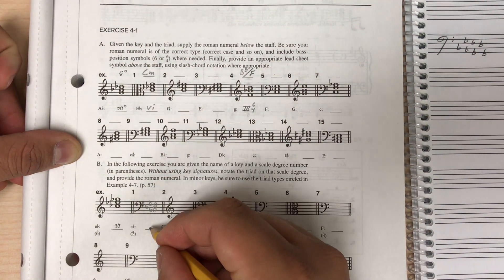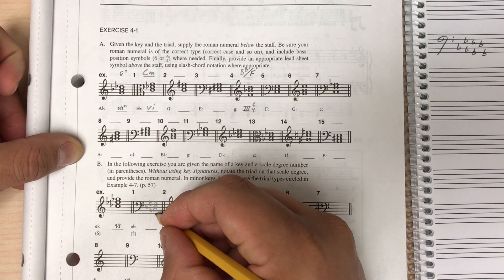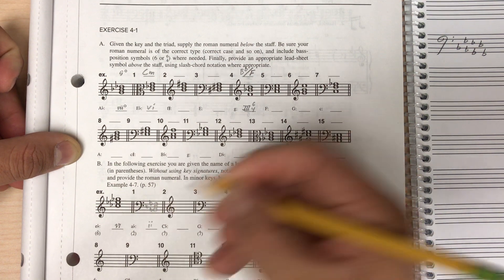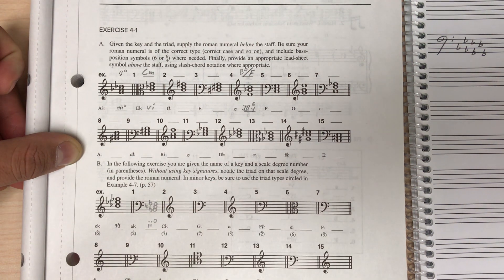And finally, this guy needs a Roman numeral. So this is a II chord and it's diminished. The II chord is diminished in minor. So I'm going to use lowercase Roman numeral. And because it's diminished, put our diminished sign.